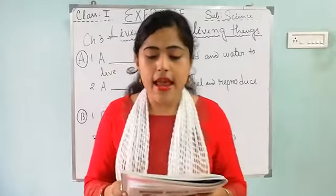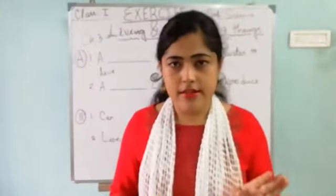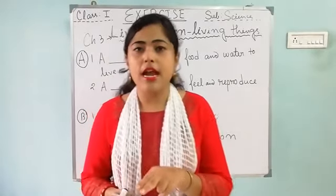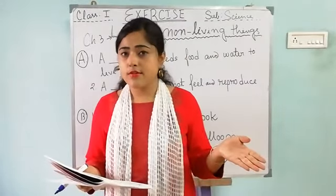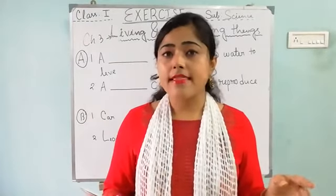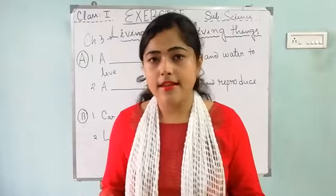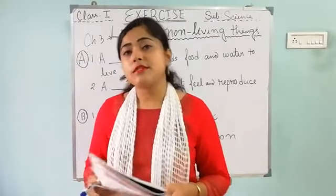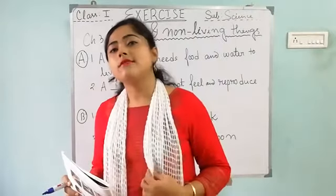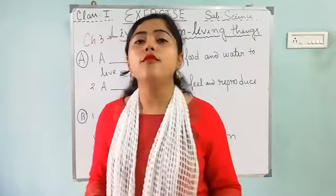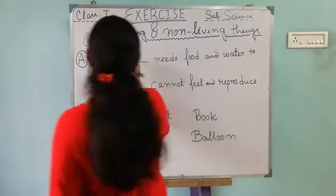A desk needs food and water to live. Who needs food and water to live? Obviously, living things, not non-living things. The three options are chair, fish, and car. Chair is a non-living thing — it cannot move and does not need food and water. Car is also a non-living thing. Fish is a living thing because it is an aquatic animal. Fish can move and fish need food and water. So the correct answer is fish.